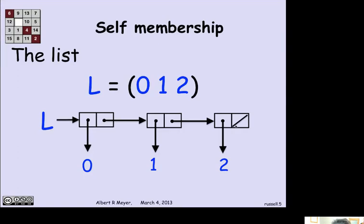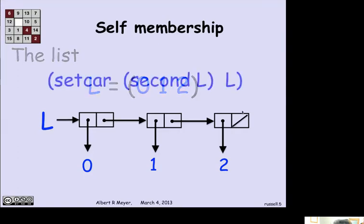So using the language of scheme, what I can do is do an operation called set car, where I'm taking, in this case, I'm setting the second element of L, that is this cons cell to L. And set car is saying, let's change what the element in the left-hand part of this cell is. This is where the value of the second element is. Let's change the value of the second element to be L.